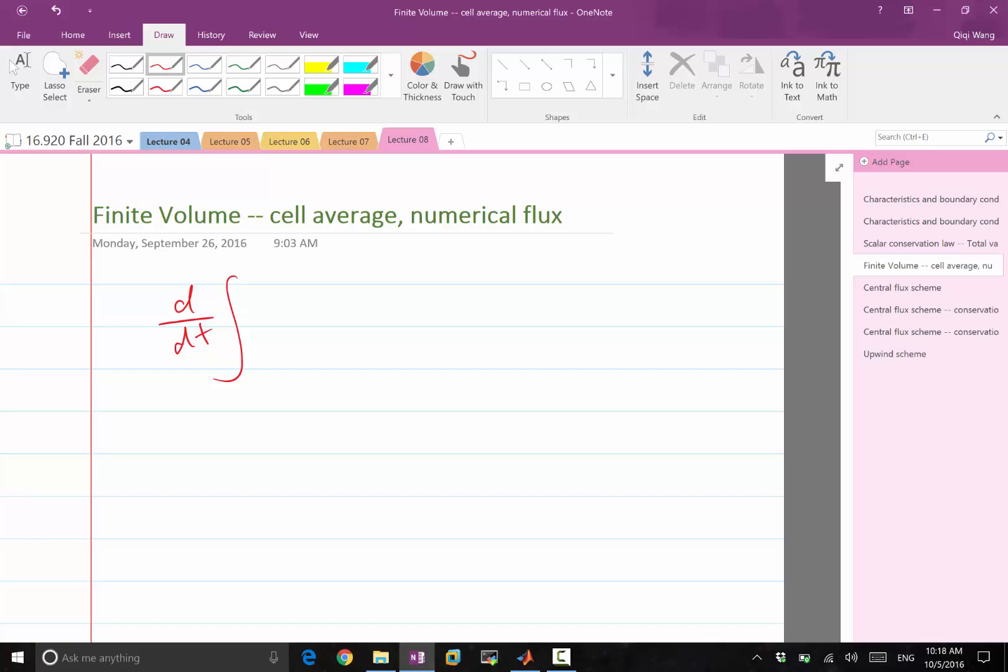Right? For example, a second order scheme, the error term would be proportional to delta x squared times maybe the third order derivative of the function, maybe the fourth order derivative of the function, depending on what is the differential operator. But the thing is, when you have a discontinuous solution, the third order derivative is what? It's infinite. The fourth order derivative is infinite. So the order of accuracy doesn't, Taylor series order of accuracy doesn't make any sense anymore.